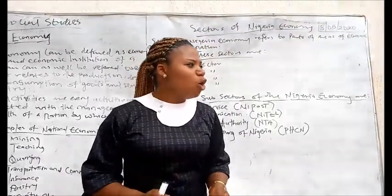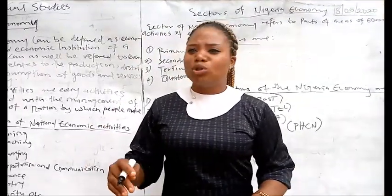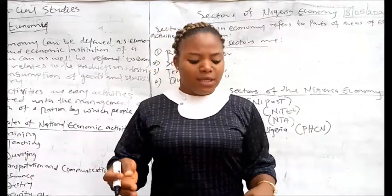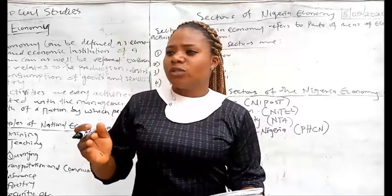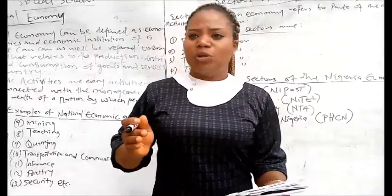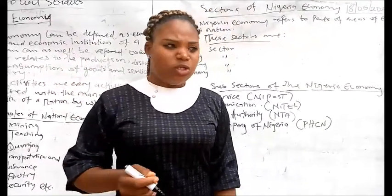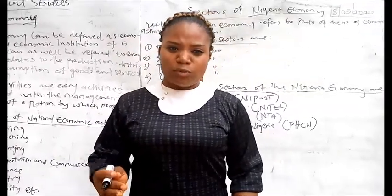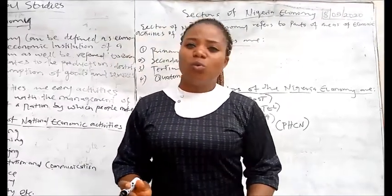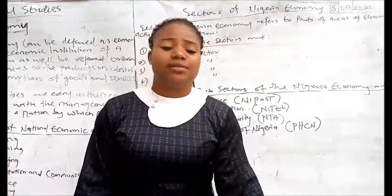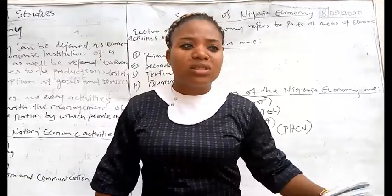Then PHCN — the Power Holding Company of Nigeria. Formerly it was called NEPA. This PHCN was established in July 2005 under Obasanjo's regime. Now it is called PHCN, but formerly called NEPA. Their duty is to generate electricity and also distribute it.